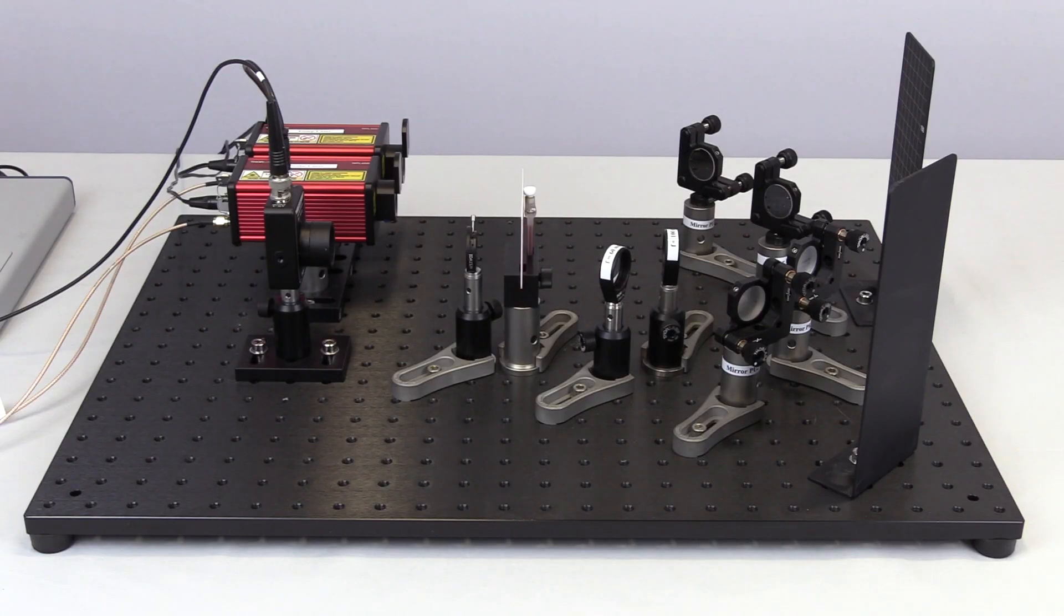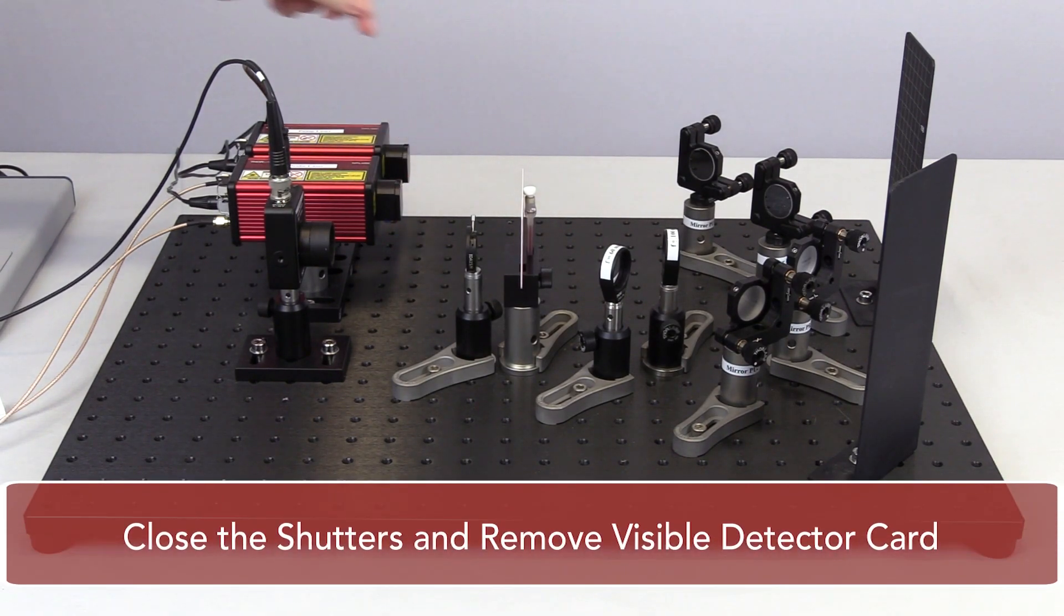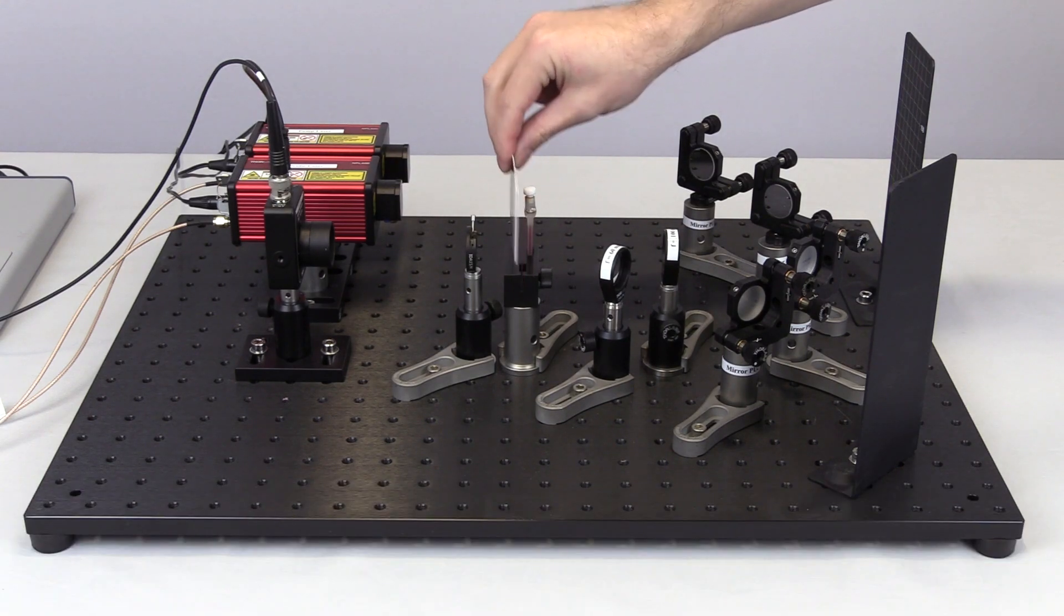Now, it's time to put the sample in the beam path. First, close both laser shutters and remove the detector card from the sample holder.